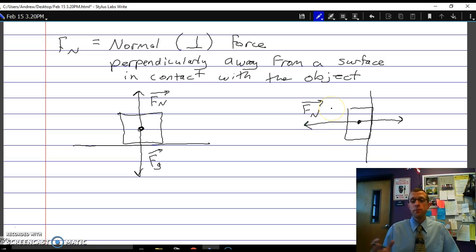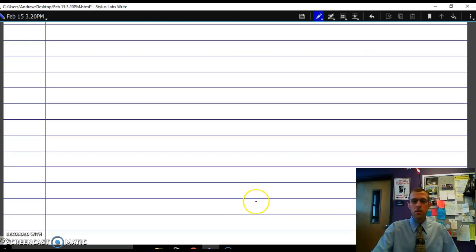So normal force is going to be away from any surface that our object is touching. It's a consequence of the electric interaction between the electrons in our object in question and the electrons in the surface that we're in contact with. So that's normal force. You see that on almost every problem.